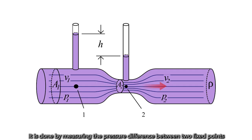It is done by measuring the pressure difference between two fixed points in a long, straight tube of circular cross-section for steady flows.